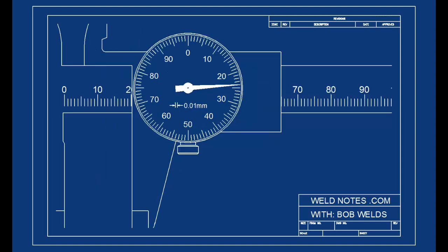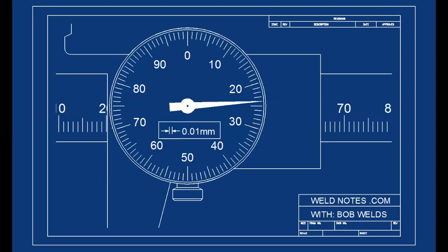We look on the caliper itself to see what each mark on the dial represents. See, this one says that each mark on the dial represents one one hundredth of a millimeter, that is .01 millimeters.